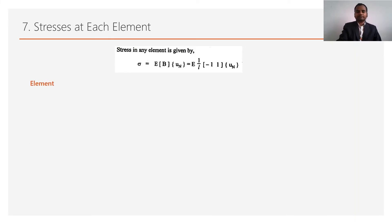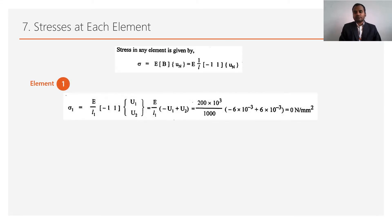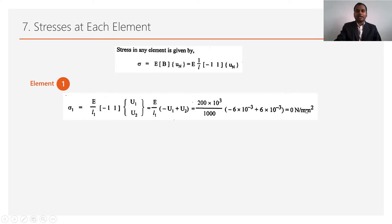For element number 1 (nodes 1 and 2): σ₁ = E × (1/L₁) × [-1, 1] × [u1; u2] = (E/L₁)(−u1 + u2). Putting in all the values gives a stress of 0 N/mm².